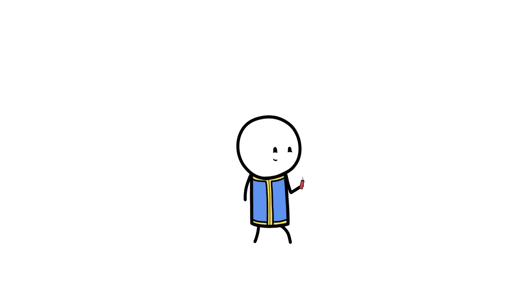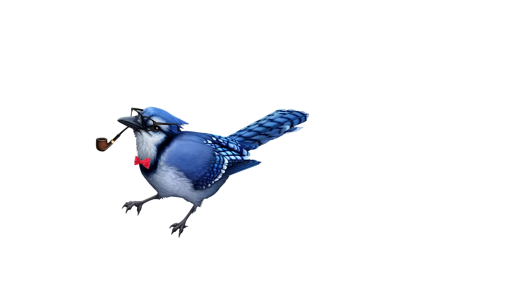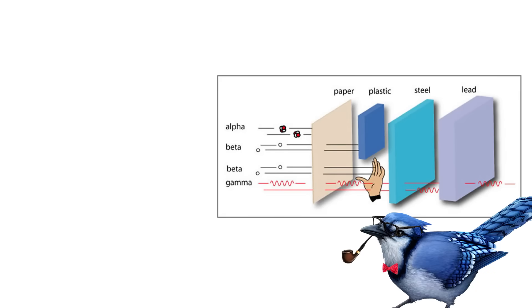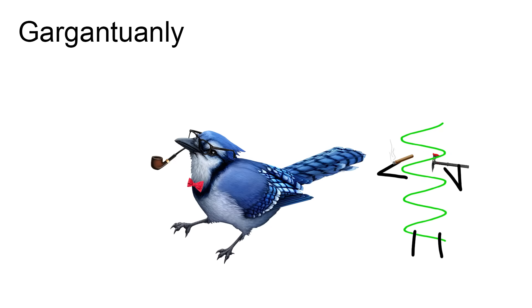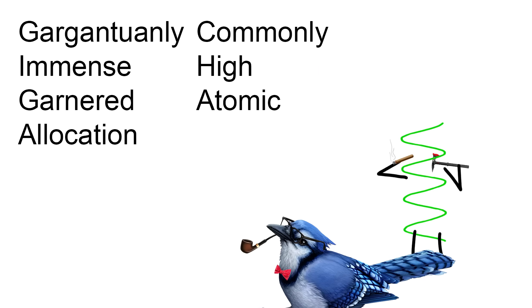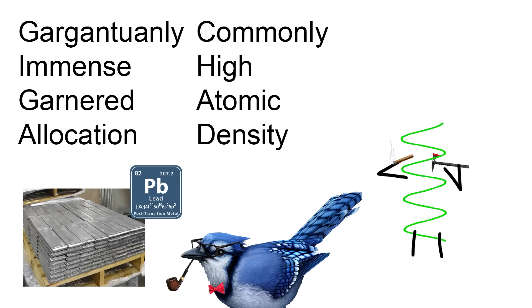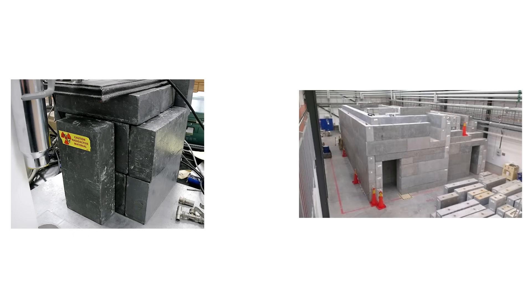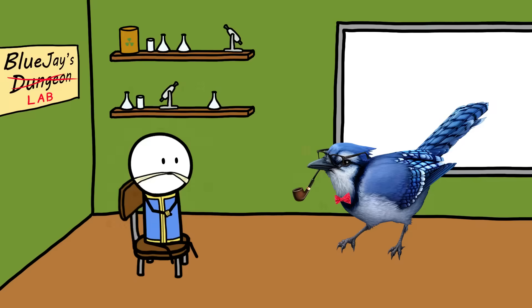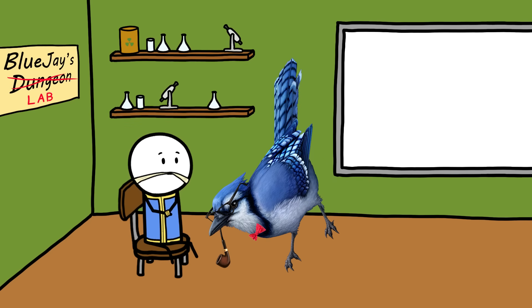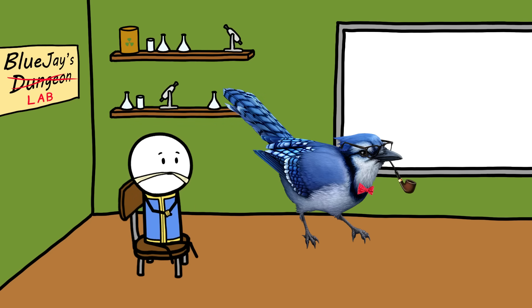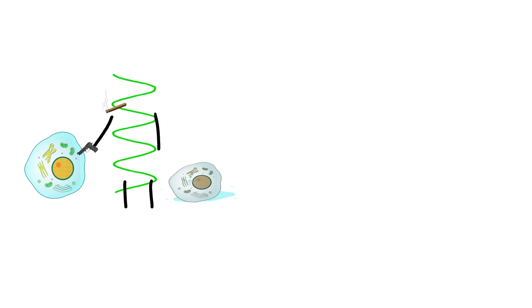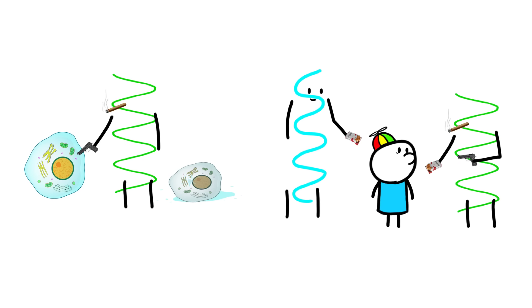Backed by all that energy, gamma rays are the most penetrating form of radiation out there, so much so that it takes a gargantuanly immense garnered allocation of commonly high atomic density material to stop it. Or a gigachad. It requires several inches of lead or a few feet of concrete to stop gamma rays, meaning that pathetic sack of meat you call a body doesn't stand a chance. No matter how much creatine you eat. The ionizing nature of gamma rays means they can kill your cells and cause DNA damage that leads to cancer.